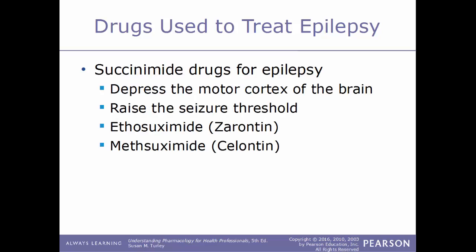Another category used to treat epilepsy are the succinimide drugs. These act by depressing the motor cortex of the brain and by raising the seizure threshold. Examples include ethosuximide, sold under the trade name Zarontin; and methsuximide, sold under the brand name Celontin.